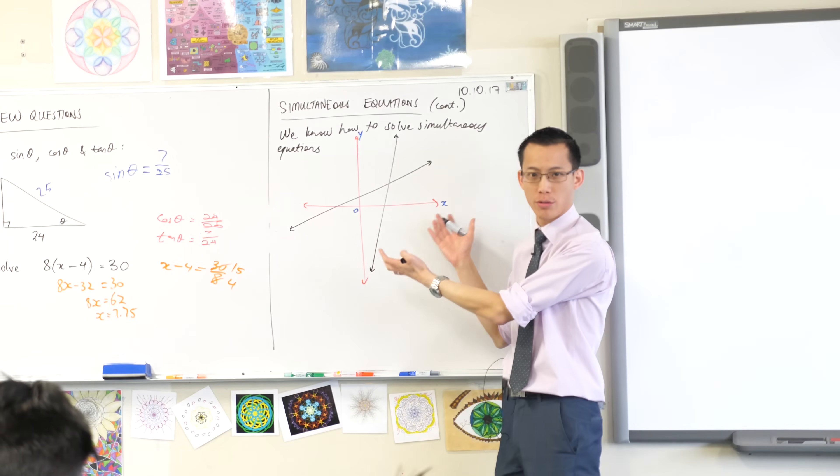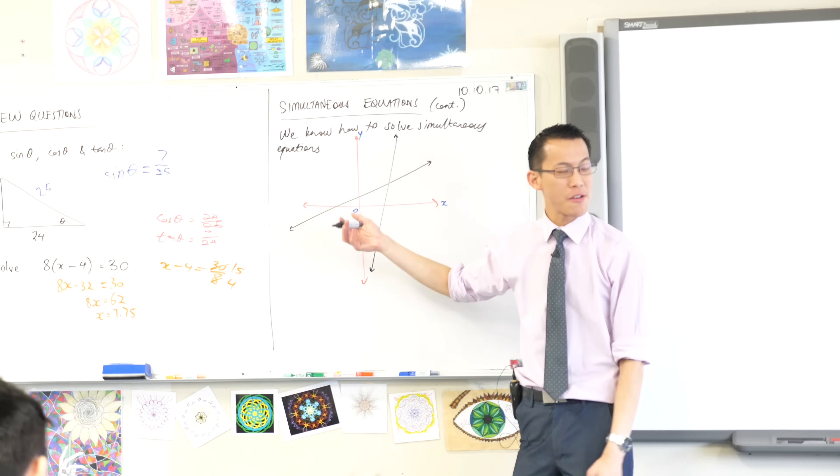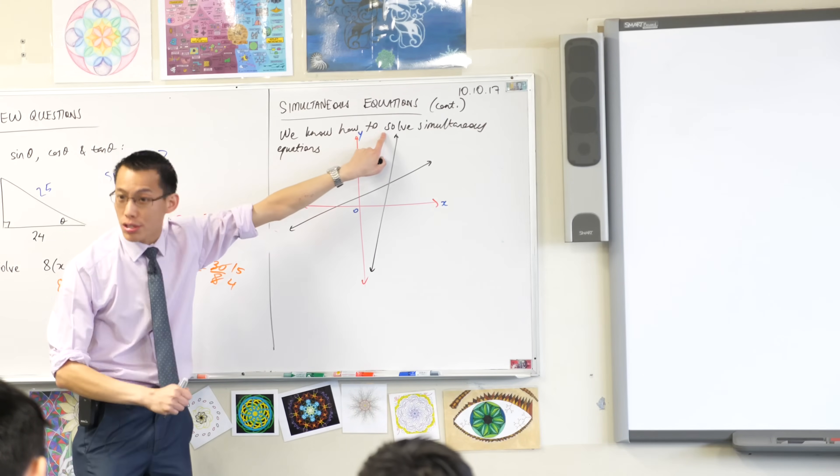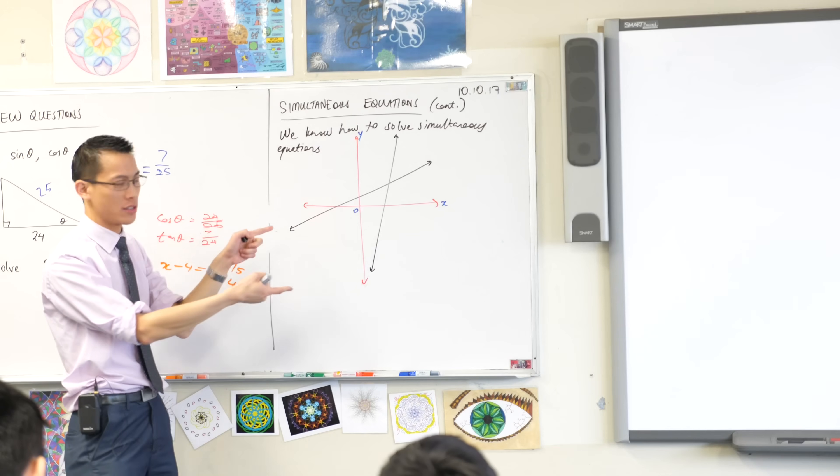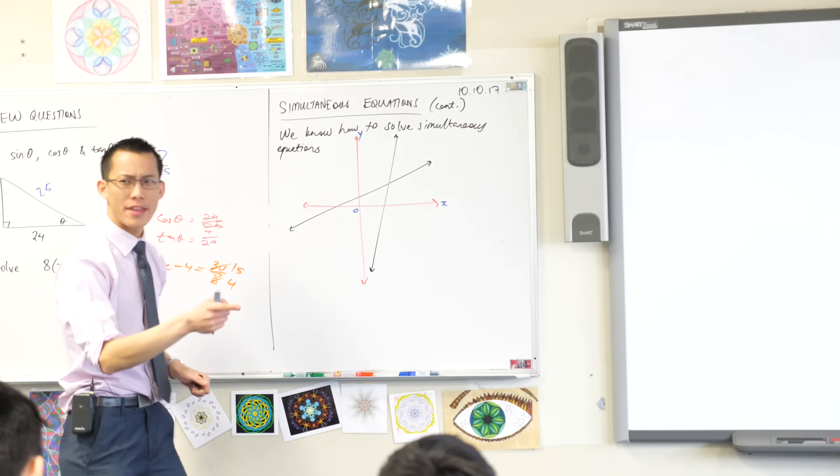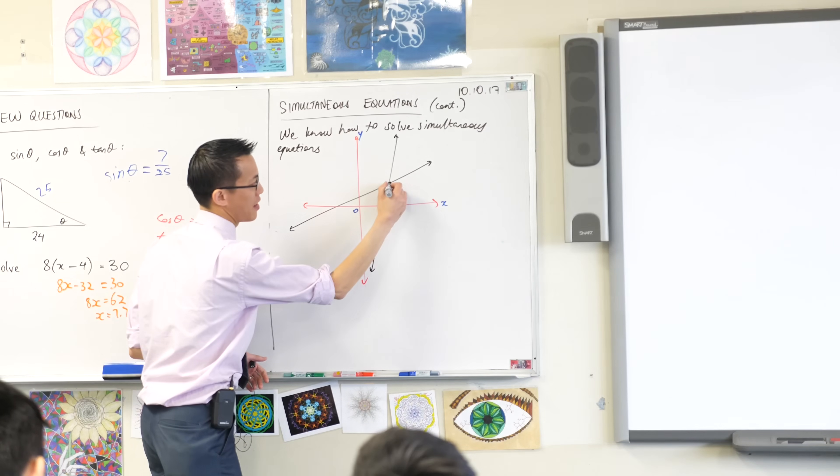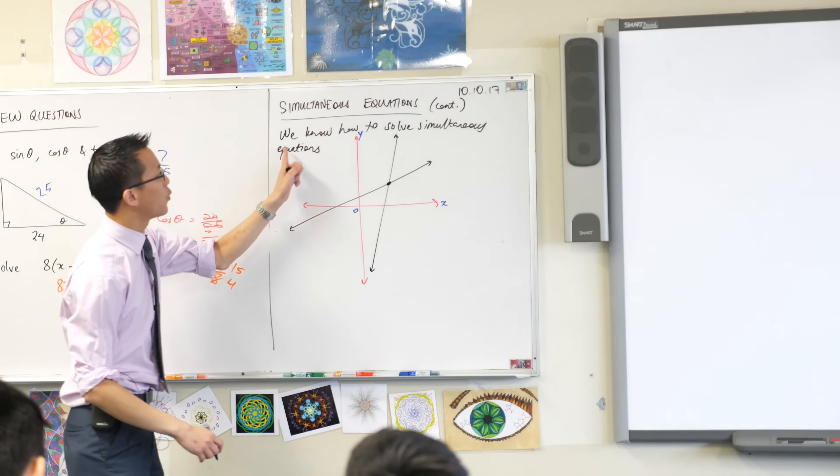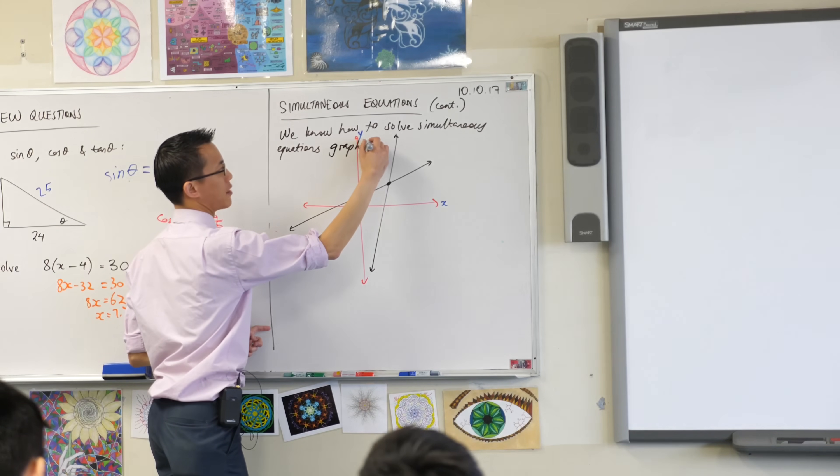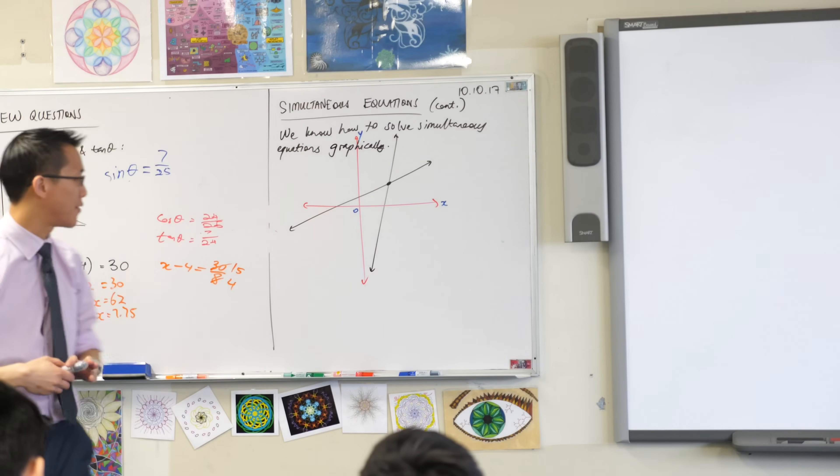It involved doing what? It involved drawing, right? We had to graph them and then what we were searching for, the solution of this simultaneous equations, was what? What was it? Yeah, where the two lines meet. It's a point, yeah? That guy right there. So we know how to solve simultaneous equations, we would call this method the graphical method because you've got a graph, right? So we know how to do it graphically.